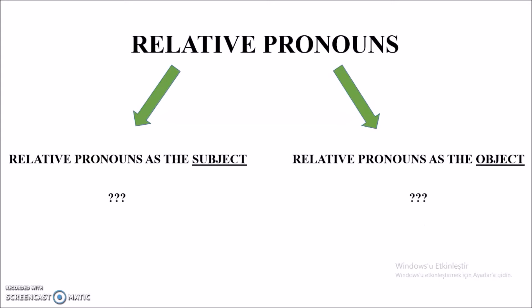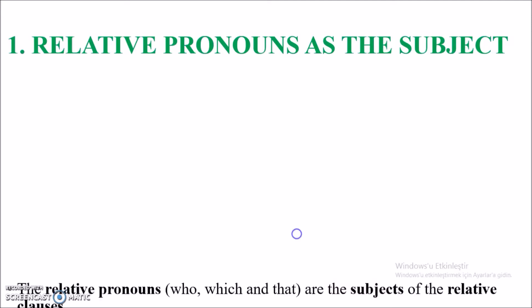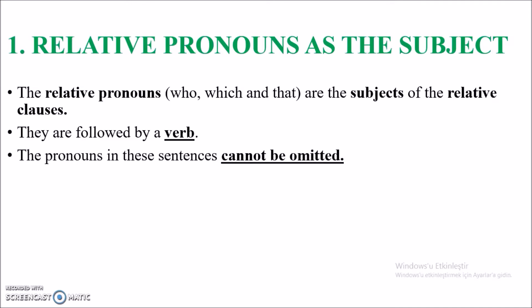When we use relative pronouns as the subject, 'who', 'which', and 'that' are the subject of the relative clause — not the main sentence, but the relative clause. The key part is that they are followed directly by a verb. After the pronoun, I need to see a verb in any tense directly. This is also connected to the new topic — omission of relative clauses. If you are using these pronouns as subjects of relative clauses, you cannot omit them.